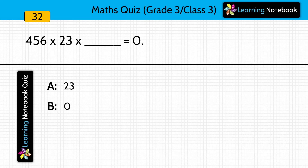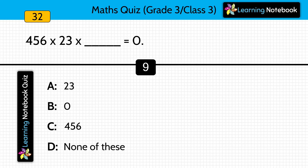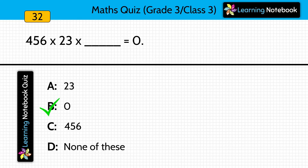456 into 23 into dash equals to 0. The answer is 0. If we multiply any number by 0, we will get the product as 0 only.